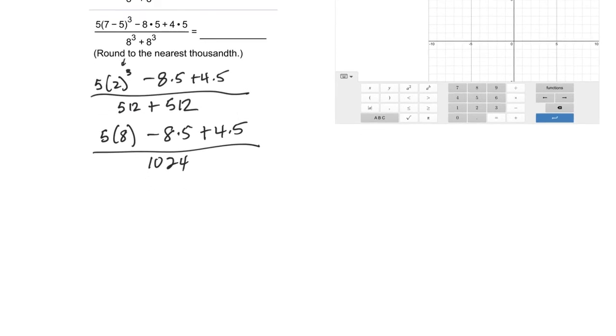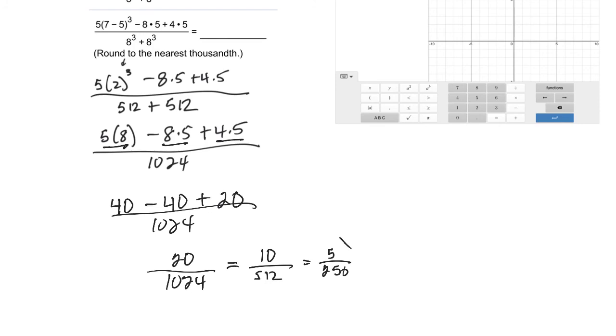Now 5 times 8 is 40 minus 8 times 5. That's another 40 plus 4 times 5 is 20. Notice I just did this multiplication, that multiplication, that multiplication. I knew I'd have to do them eventually anyway. So all over 1024. 40 equals 40 is 0, plus 20 is going to be 20 over 1024. You can probably divide those. 2 goes into 20, 10. 2 goes into 1024, 512. I think 2 will go again on that one. It'll be 5 and 2 into that is 256. So I think my answer I'd come up with is 5 over 256.